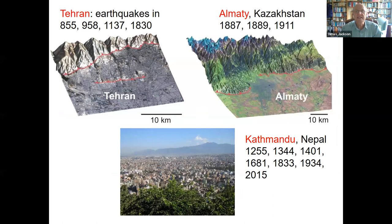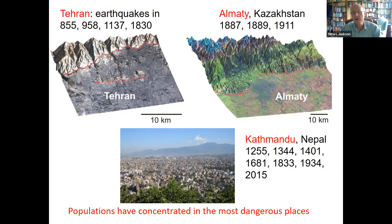In the past, earthquakes in these places killed a few thousands; now you're talking about mega-cities. Typically in Iran, 30 percent of the population are killed. Tehran has been destroyed four times; Almaty, capital of Kazakhstan, has been destroyed three times; Kathmandu and Nepal destroyed many many times. The capital of Uzbekistan, Tashkent, was destroyed in the 1960s; the capital of Turkmenistan, Ashgabat, was destroyed in 1948, killing about 100,000 people. Populations have concentrated in the most dangerous places — that is the problem we are dealing with.